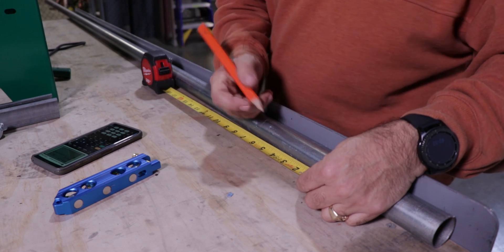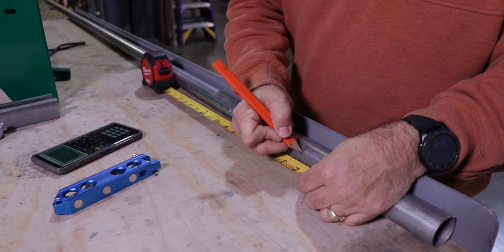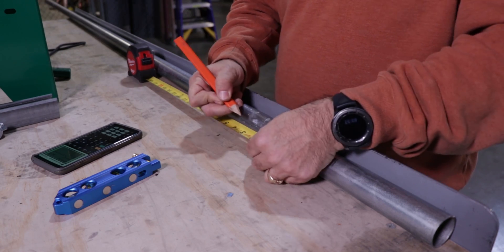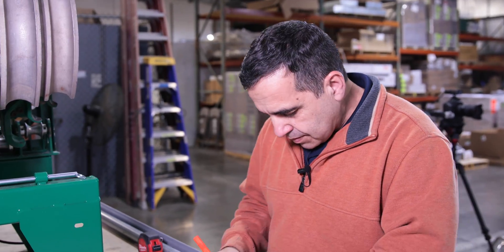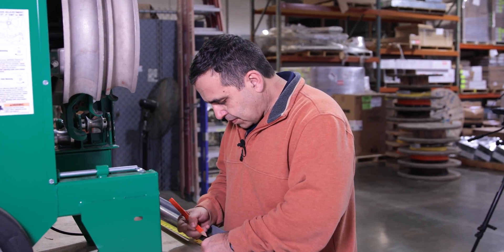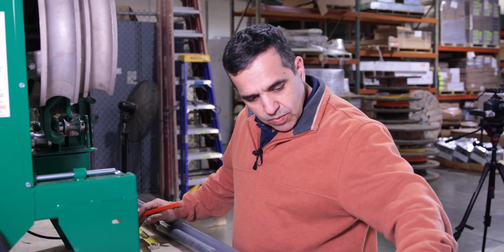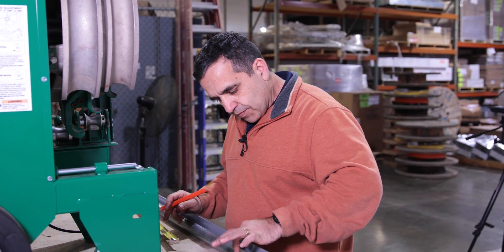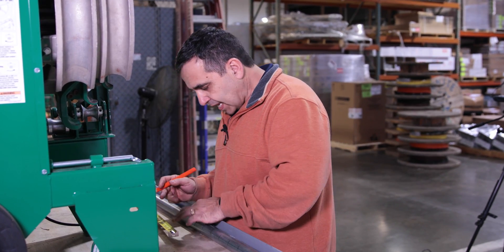So we're going to do 18 marks at two and an eighth a piece. So here's one and two. It should be 18 marks. One, two, three, four, five, six, seven, eight, nine, 10, 11, 12, 13, 14, 15, 16, 17, 18. 18 marks. Now we're going to take this over to our bender and we're going to start making bands.